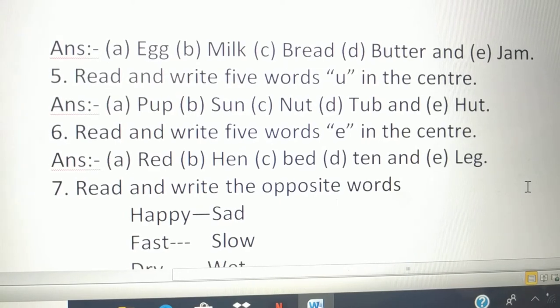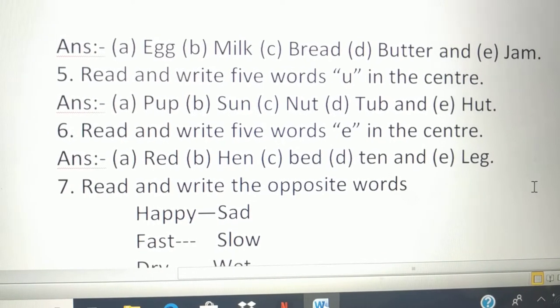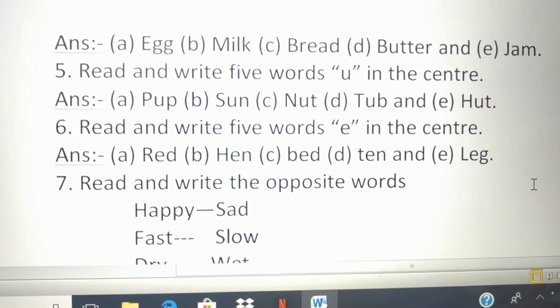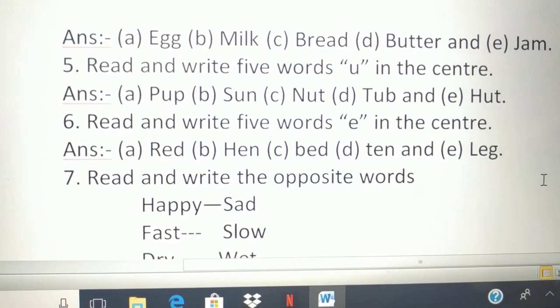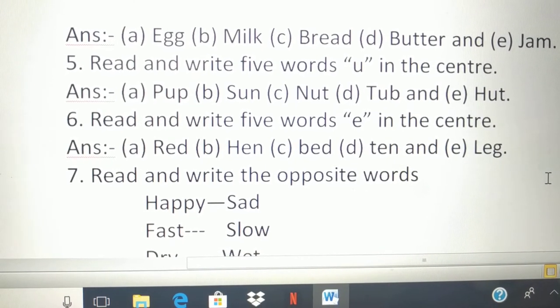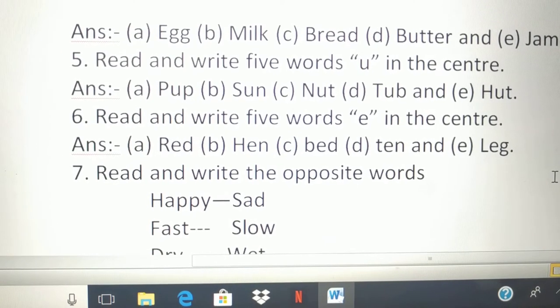Read and write five words with U in the center. Anchor, pub, sun, nut, tube, and hut.